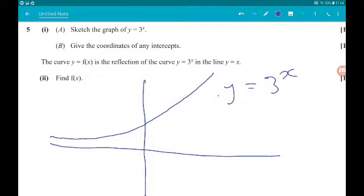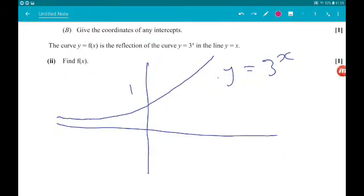Now the intercept, or the only intercept, is on the y-axis. That's when x is equal to 0. 3 to the power of 0 is 1. Try that again. There we go.